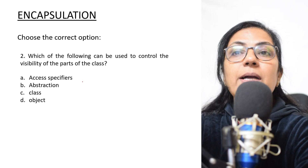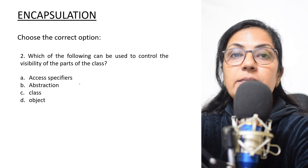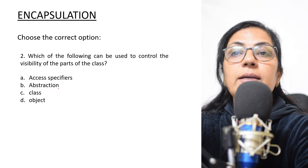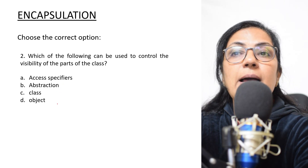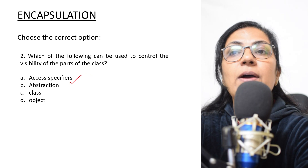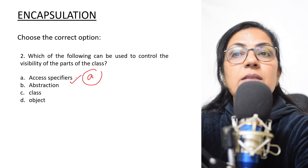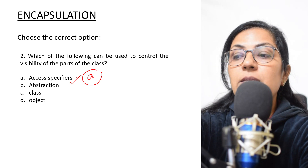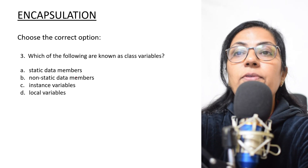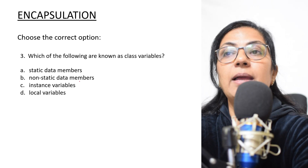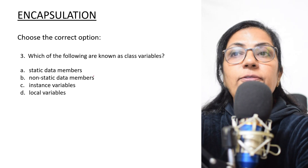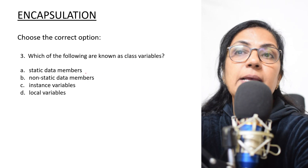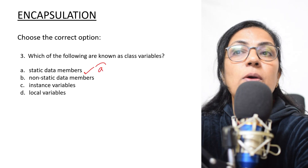Next question: 'Which of the following can be used to control the visibility of parts of the class?' Options: access specifiers, abstraction, class, and object. Access specifiers — or access modifiers — give you the scope of visibility; they control the visibility of different variables and functions.